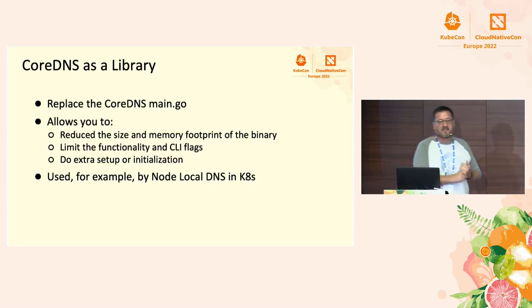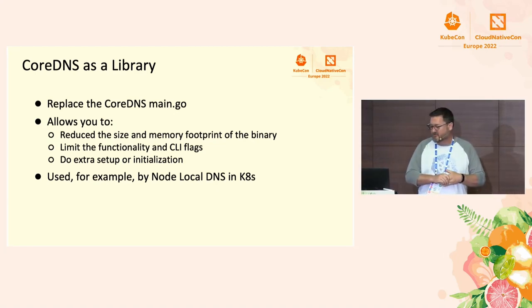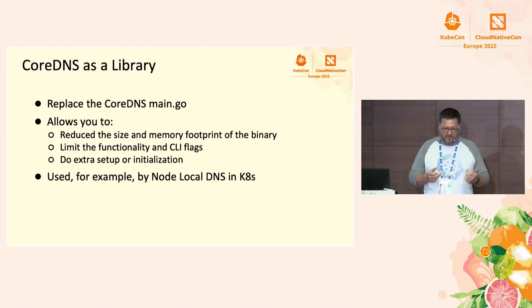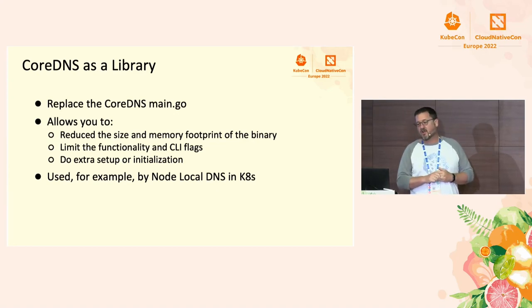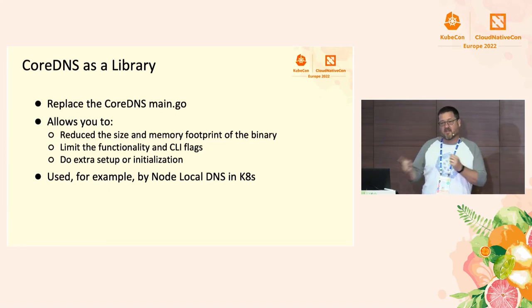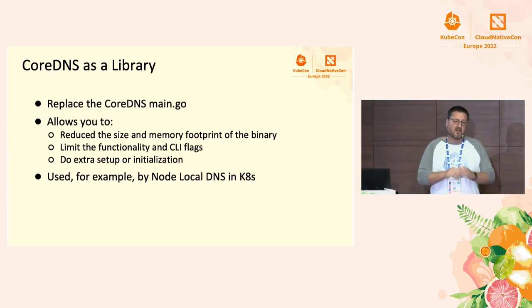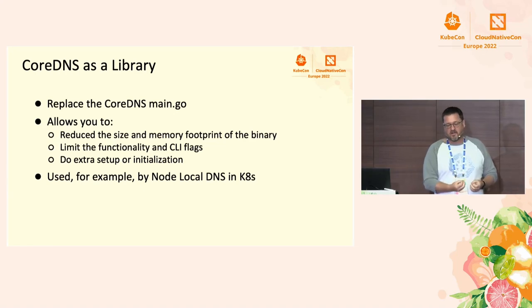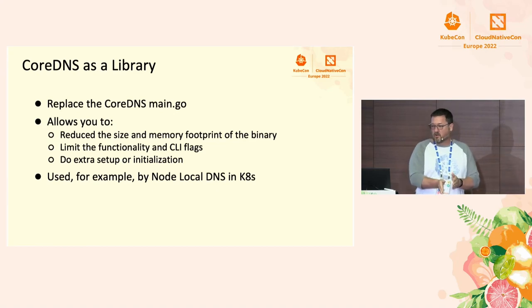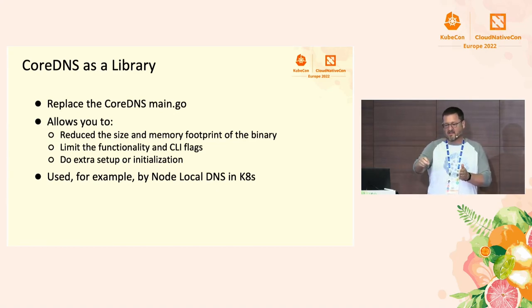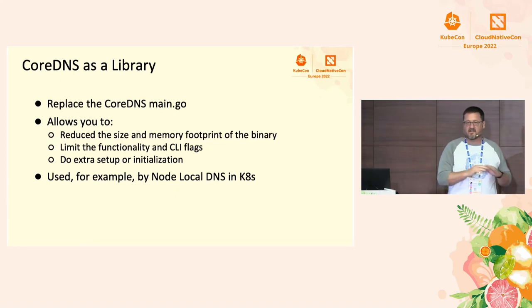The second way is Core DNS as a library. Instead of running the Core DNS binary itself, you're embedding Core DNS in another binary. You can use this to strip out plugins you don't care about. The node local DNS feature in Kubernetes uses this technique — it runs a mini Core DNS for caching on every node, redirects all DNS requests from that node to the local cache, and for requests that need to go to the central cluster DNS, it upgrades the connection to TCP, which fixes some kernel bugs and race conditions.